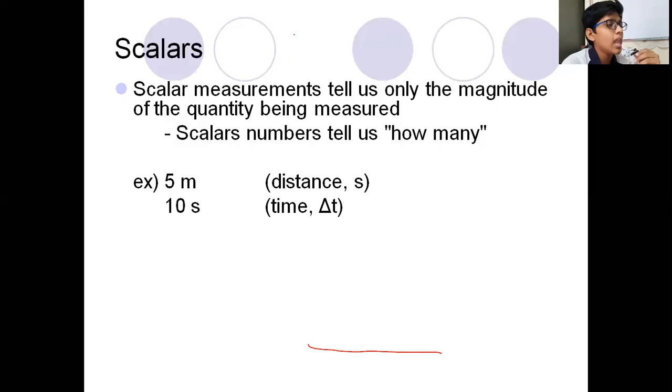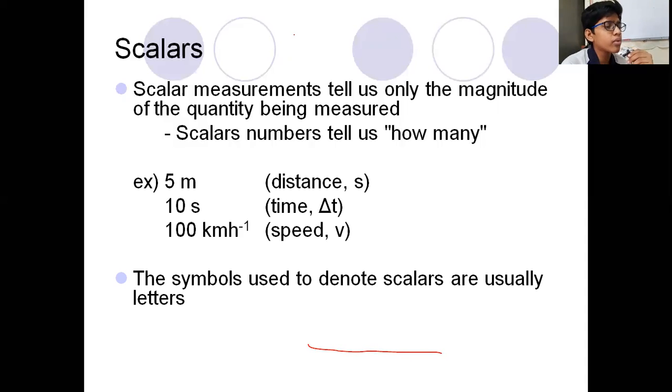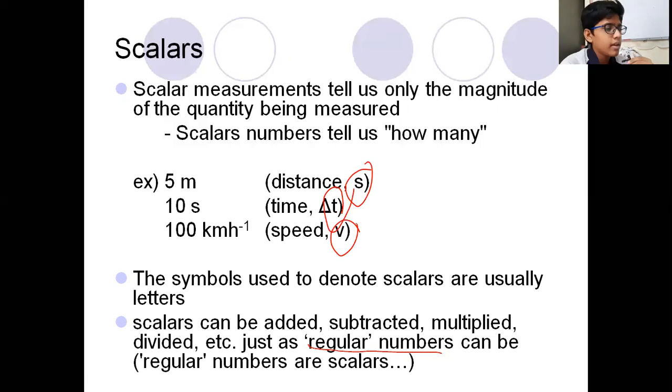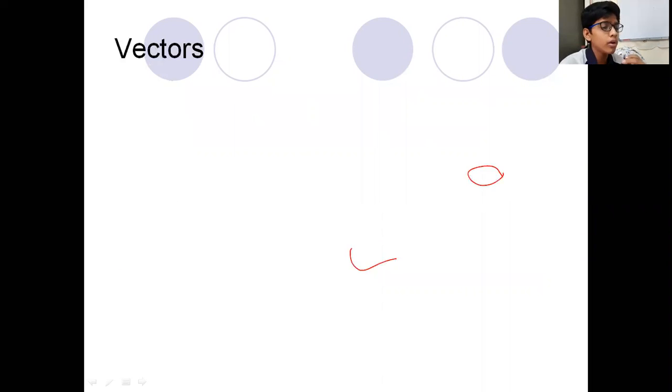For example, 5 meters, 10 seconds, 100 km per hour. The symbols used to denote scalars are usually letters, the s, the t, and the v. Scalars can be added, subtracted, multiplied, or divided, etc., just as regular numbers. We treat scalars as regular numbers like 1 plus 1, 2 plus 2. We can treat them like regular numbers and do regular operations.